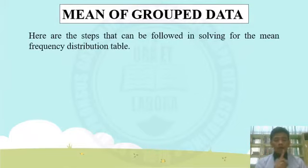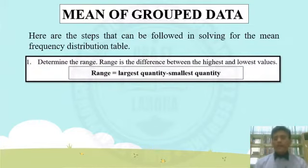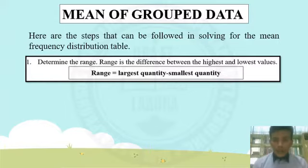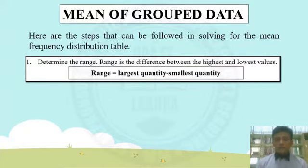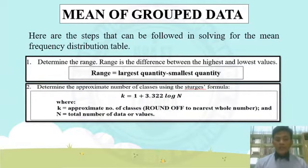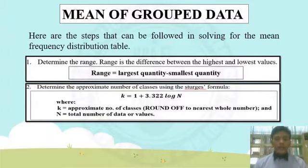Here are the steps to follow in solving for the mean from a frequency distribution table. First step: get the range. Range is the difference between the highest and the lowest values — range equals the largest quantity minus the smallest quantity. Second step: determine the approximate number of classes using the Sturges formula, where k equals 1 plus 3.322 times log n. K is the approximate number of classes rounded to the nearest whole number, and n is the total number of data values.